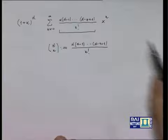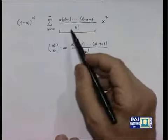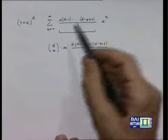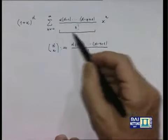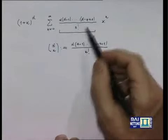Quindi la serie di Taylor, o di Maclaurin, così fatta si chiama serie binomiale.